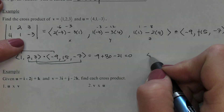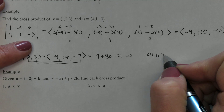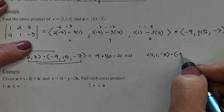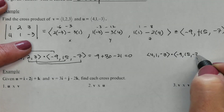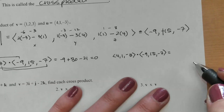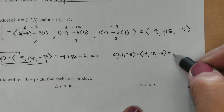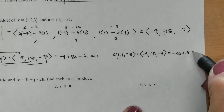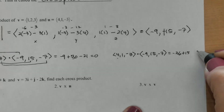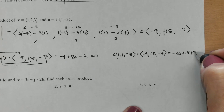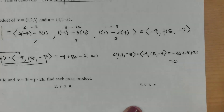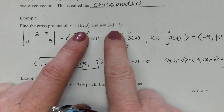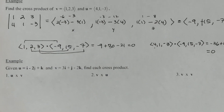I'm also going to double-check the other vector. So four, one, negative three — I'm going to dot that with the vector I found, which is negative nine, fifteen, negative seven. Four times negative nine is negative thirty-six; one times fifteen is fifteen; and negative three times negative seven is twenty-one. If I add those together, I also get zero. So I've created a vector that is orthogonal to two vectors at the same time.